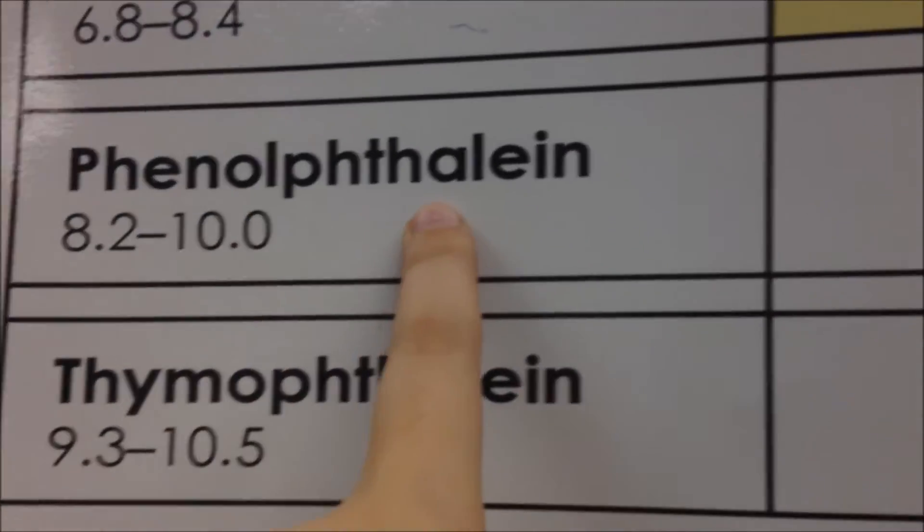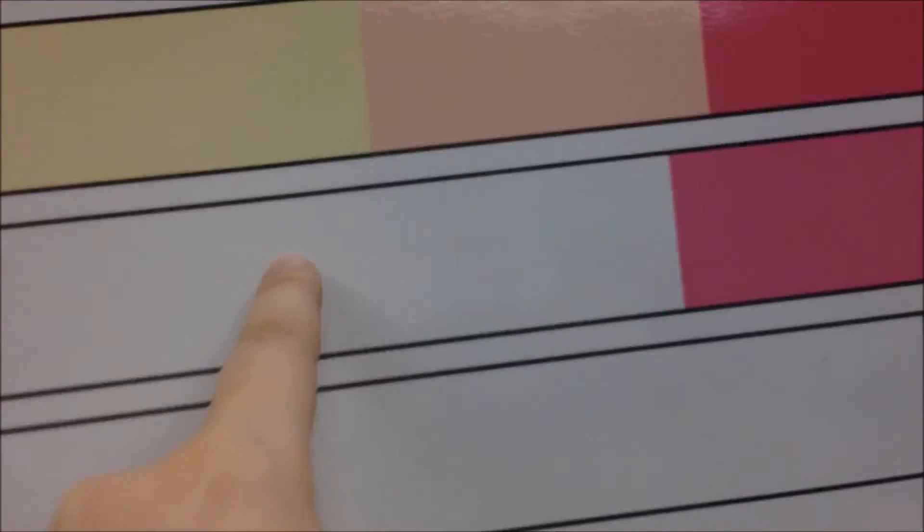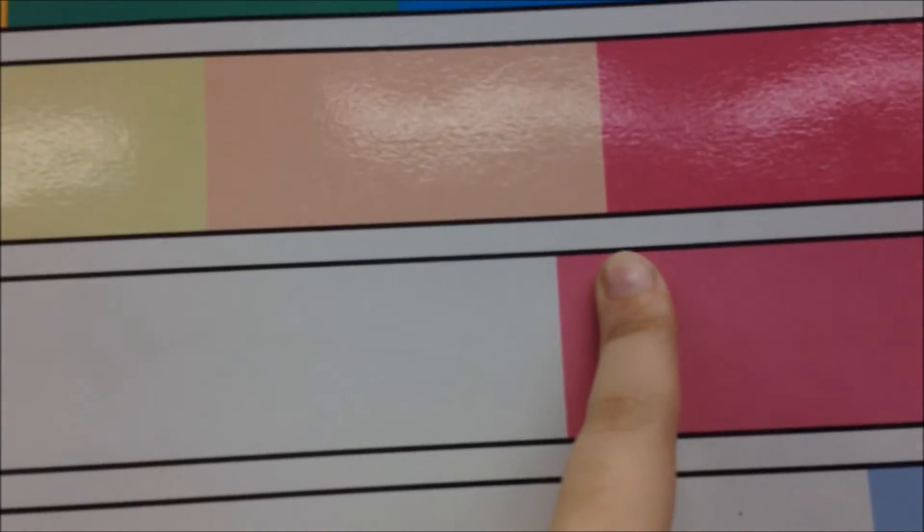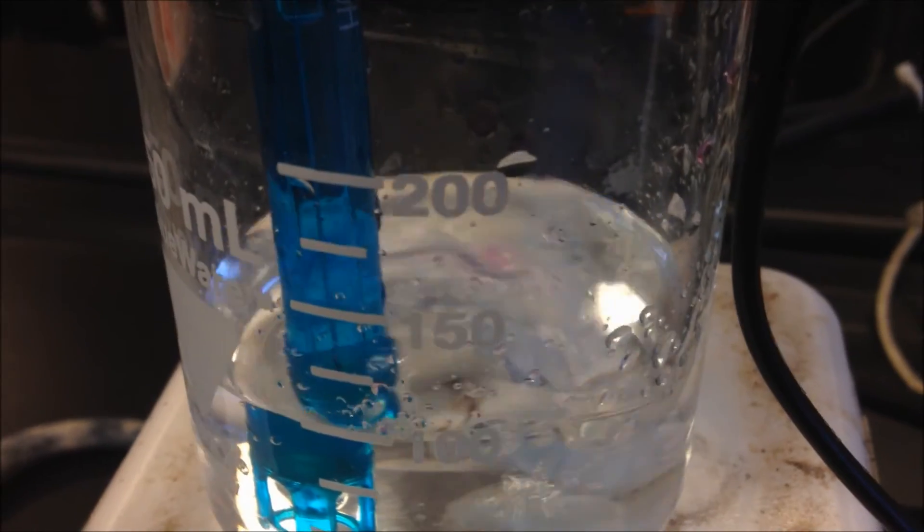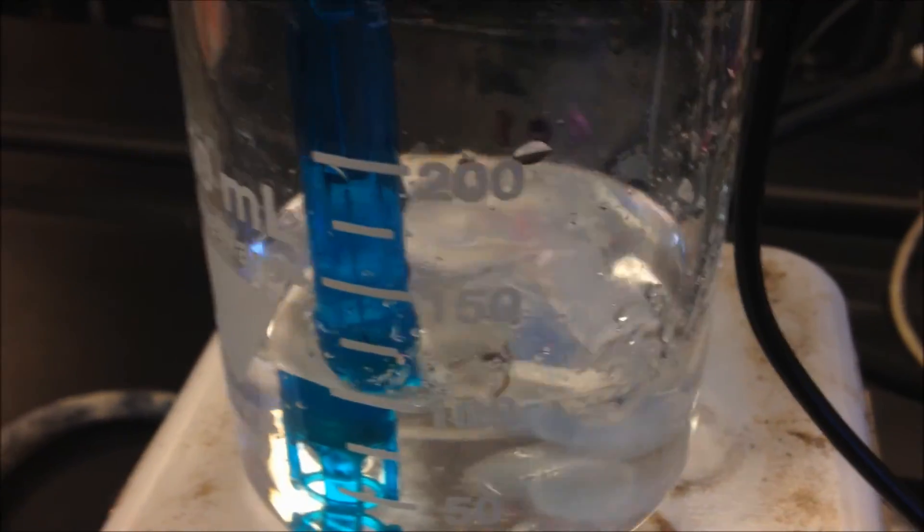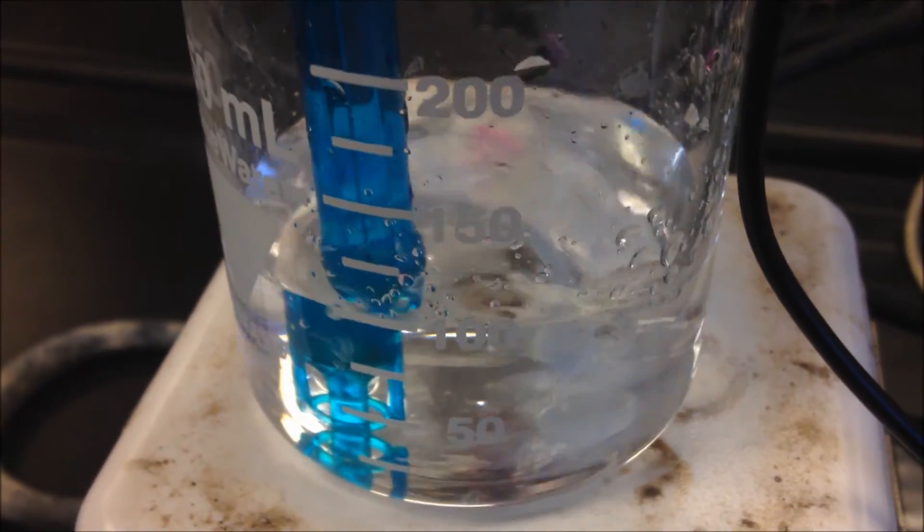This is our phenolphthalein, and that's our indicator. At about 8 it will turn pink. There's some pink coming in. Hints of pink. Two drops of pink. Slightly rising, still in buffer.